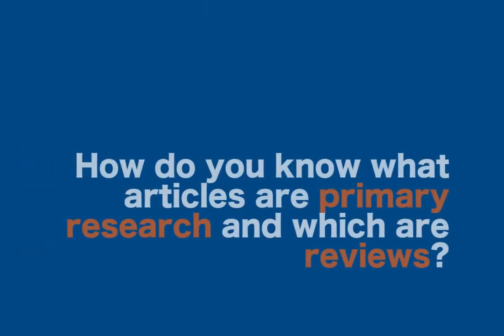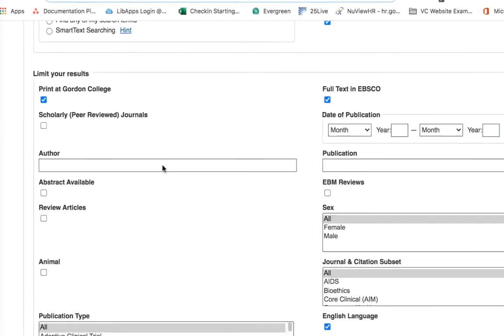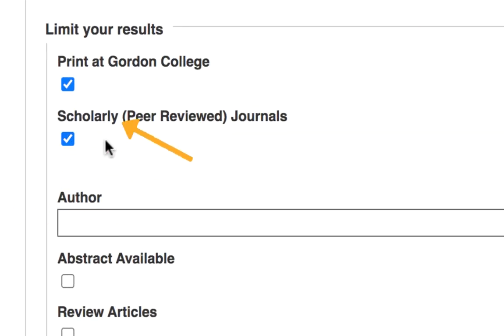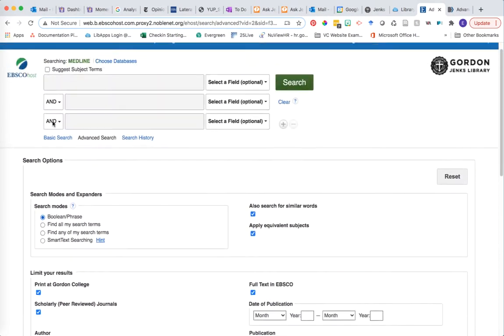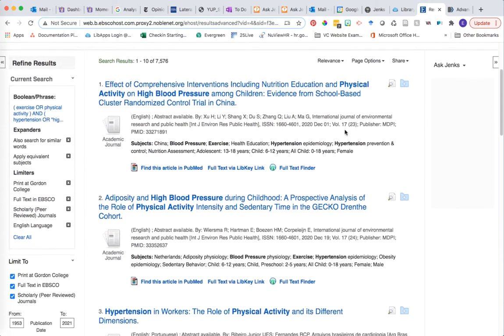But how do you know which is which? Library databases such as PubMed, Medline, or Academic Search Ultimate make the process of finding peer-reviewed articles very easy with the peer-reviewed checkbox present on most database search pages.